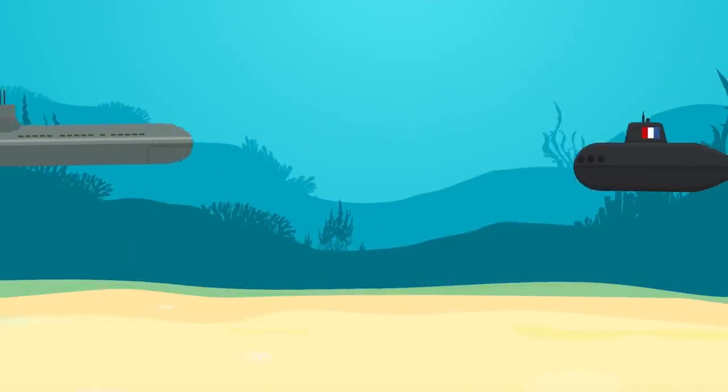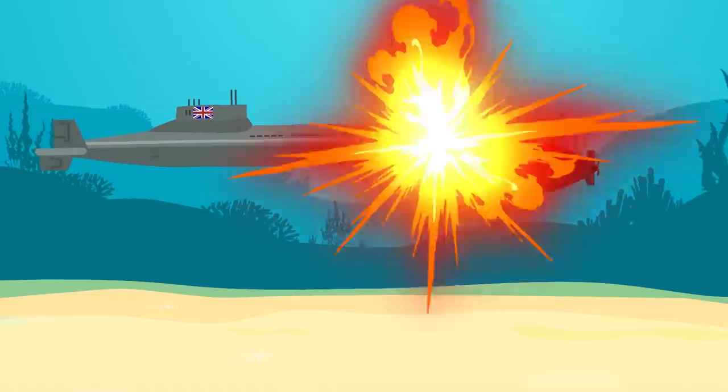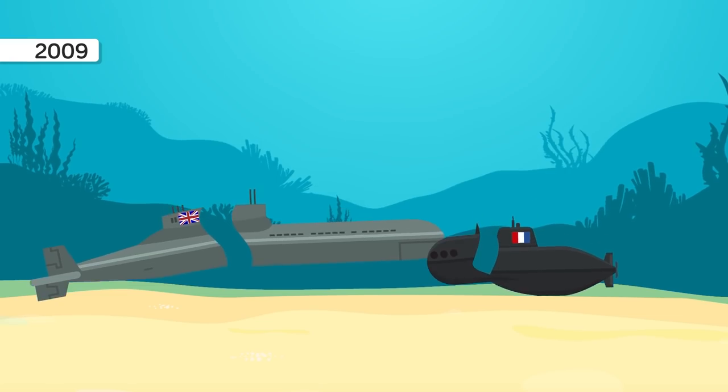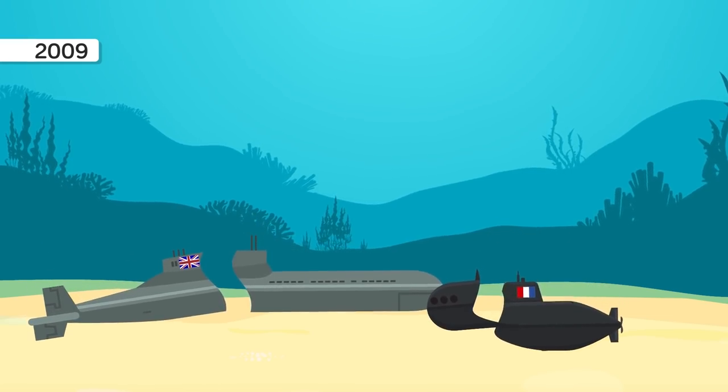27. Submarines are the stealthiest ships in the sea, so stealthy in fact that in 2009 two British and French nuclear submarines collided with one another because they couldn't detect each other.